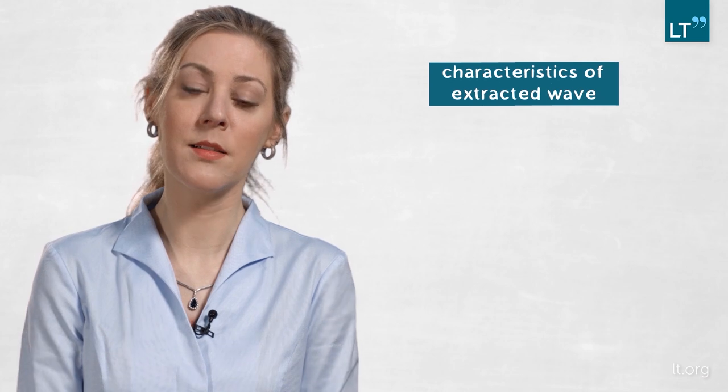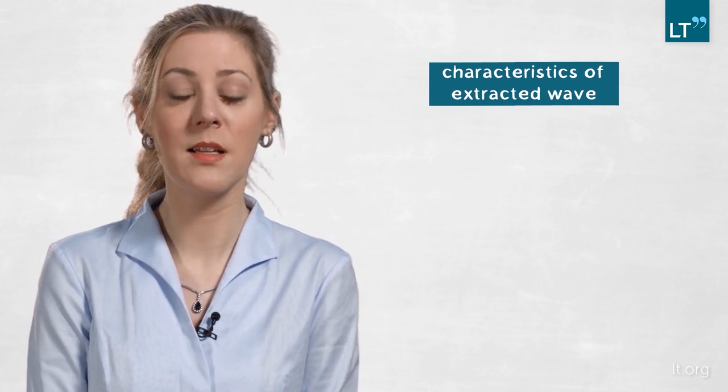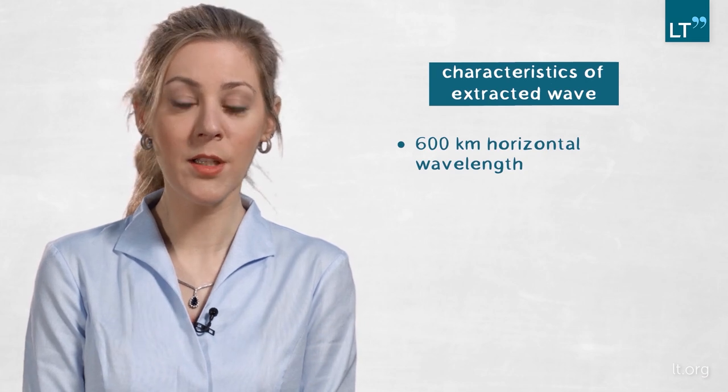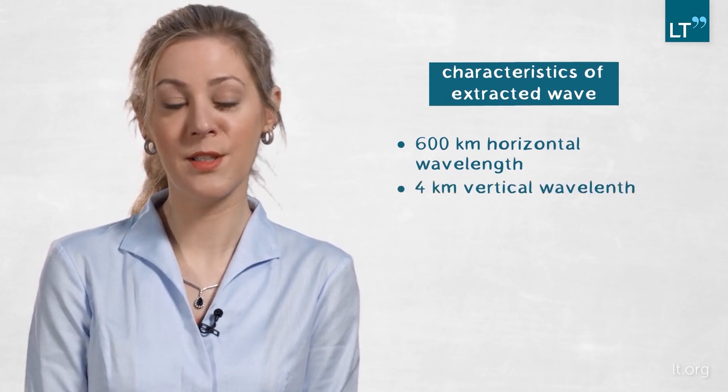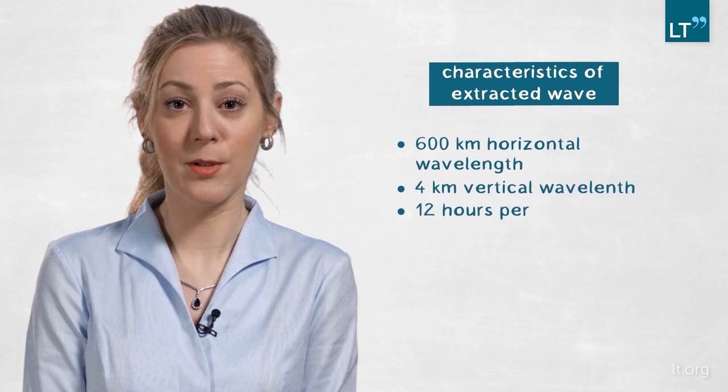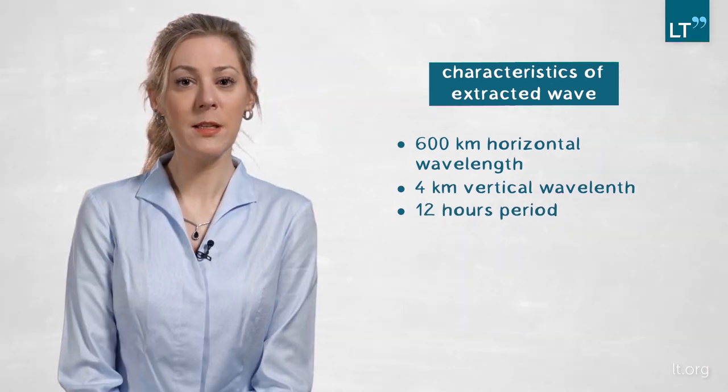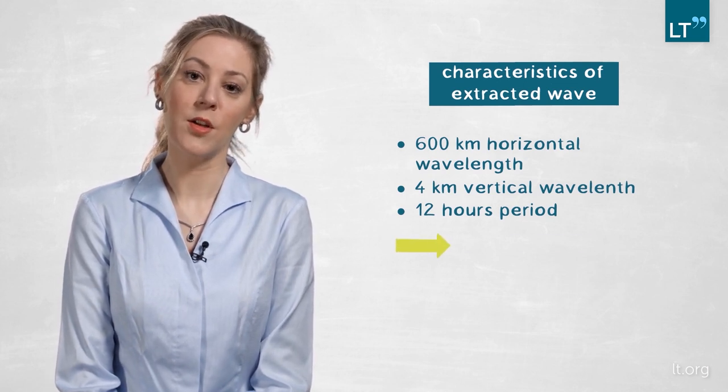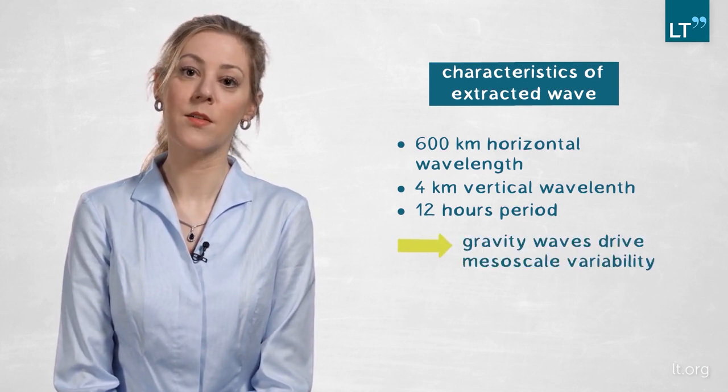The wave we extracted, the typical wave that passed the domain, has a horizontal wavelength of 600 kilometers, a vertical wavelength of 4 kilometers, and a period of 12 hours. These match up really nicely with the scales of divergence. And so we have now found a plausible explanation for what drives mesoscale variability.